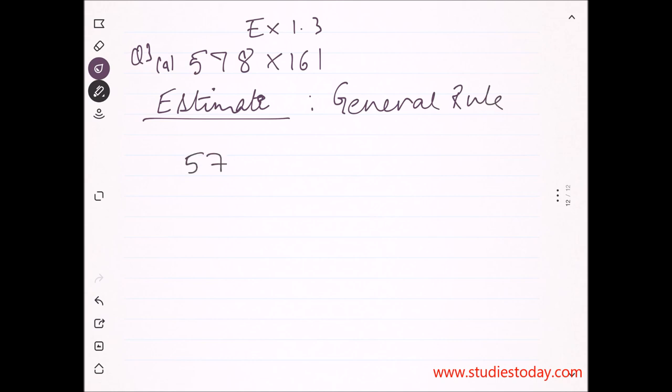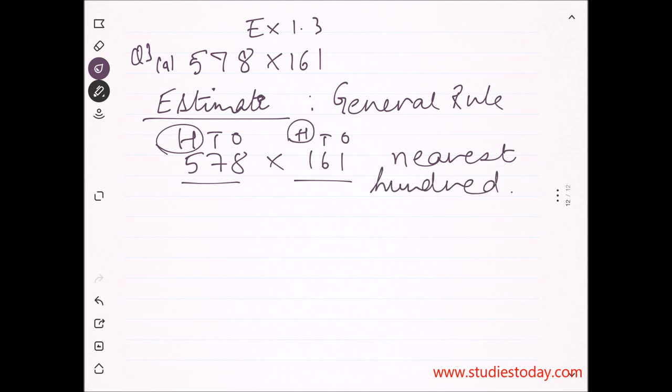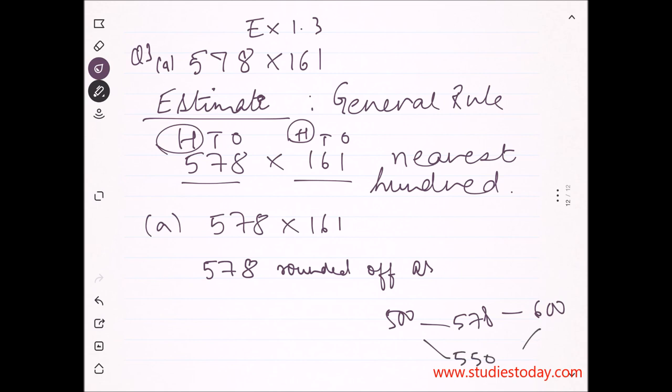For 578, the greatest place is hundreds. For 161, the greatest place is also hundreds. So we'll round off to the nearest hundred. 578 will be rounded off - it lies between 500 and 600. The midpoint is 550, and 578 is greater than 550, so it rounds off to 600.